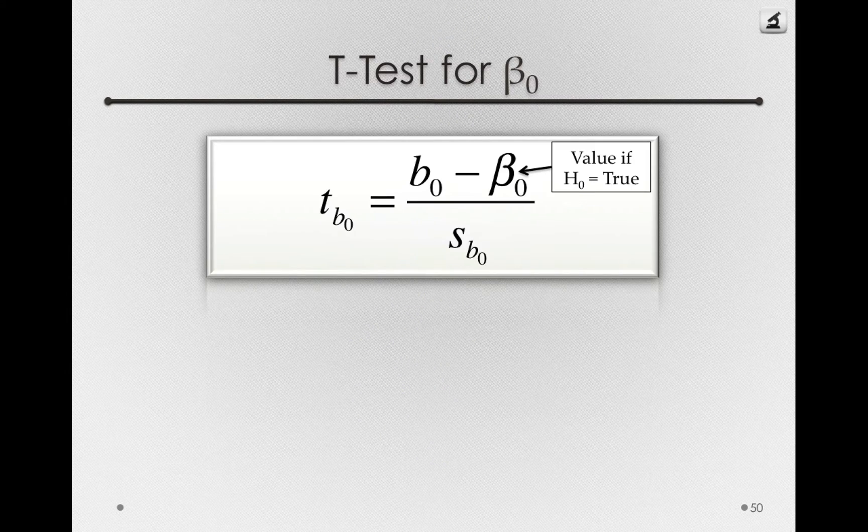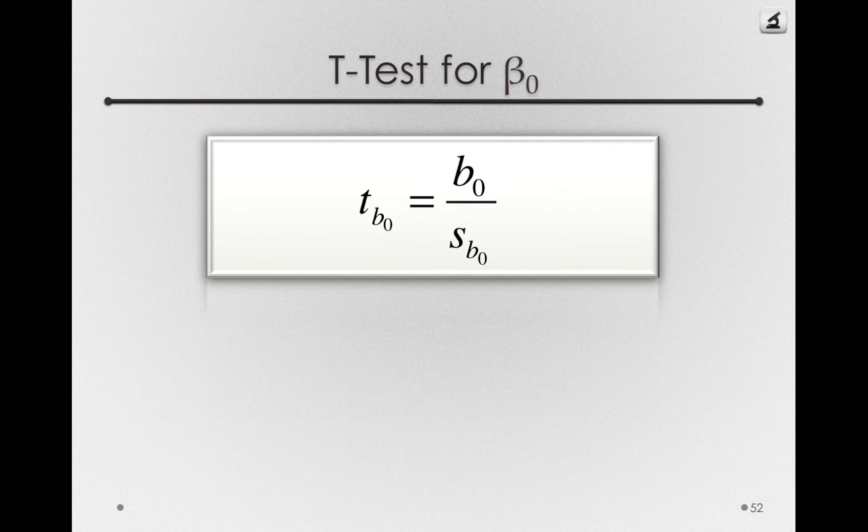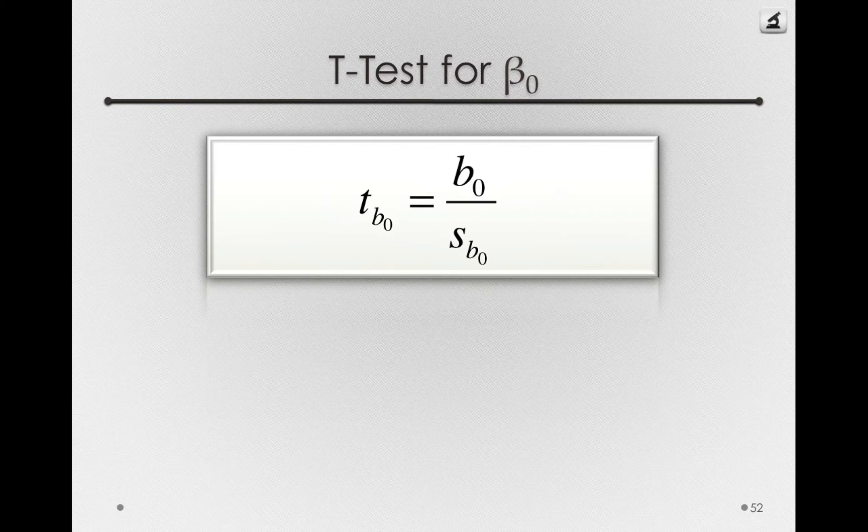So in our formula, the numerator actually reduces down to simply being our sample estimate, B sub 0, divided by the estimated standard error.